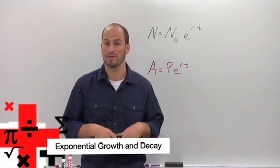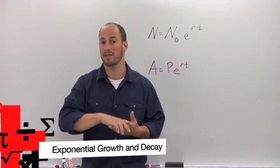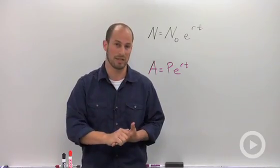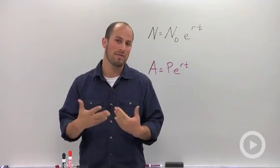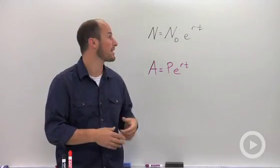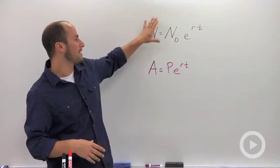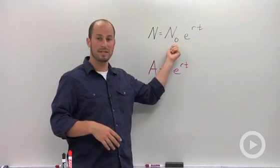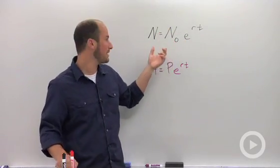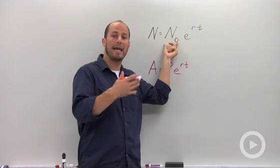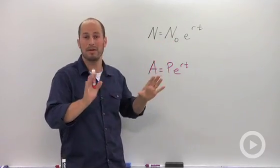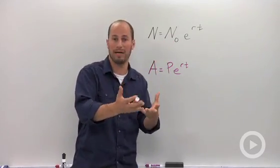Exponential growth and decay refers to an amount of substance either growing or decreasing exponentially. The formula your book typically uses is N = N₀e^(rt). This N₀, whether you hear it as 'N zero' or 'N sub zero,' is basically your initial amount.